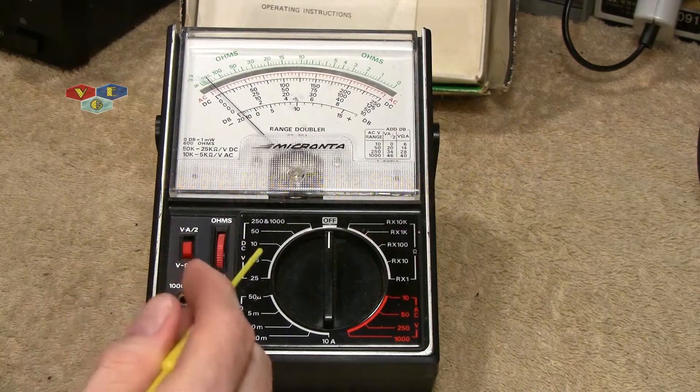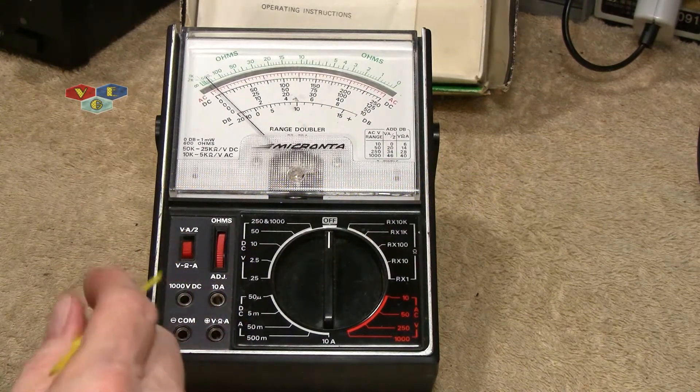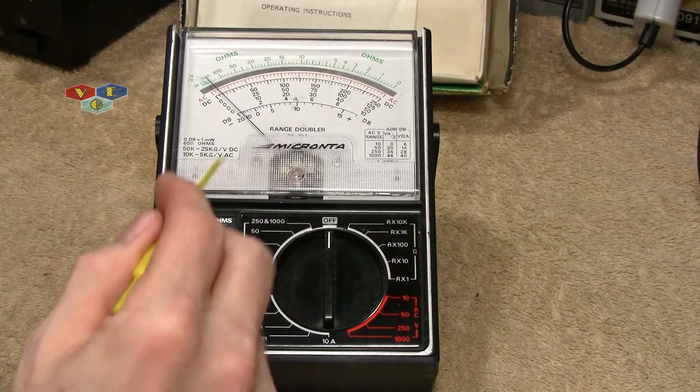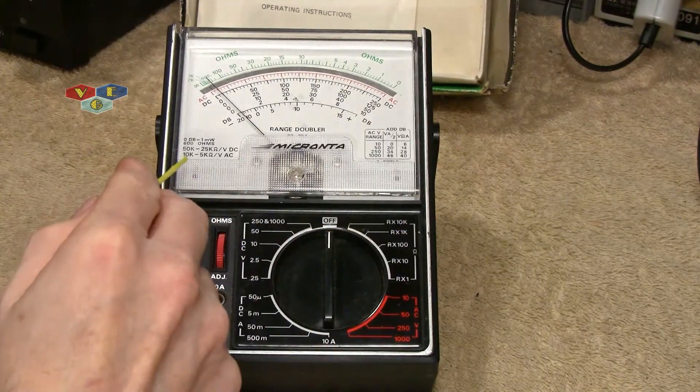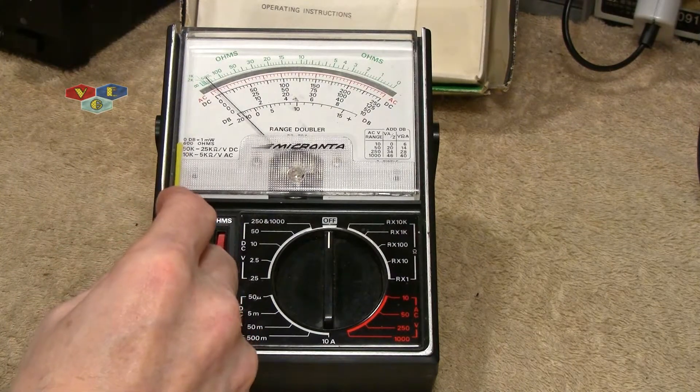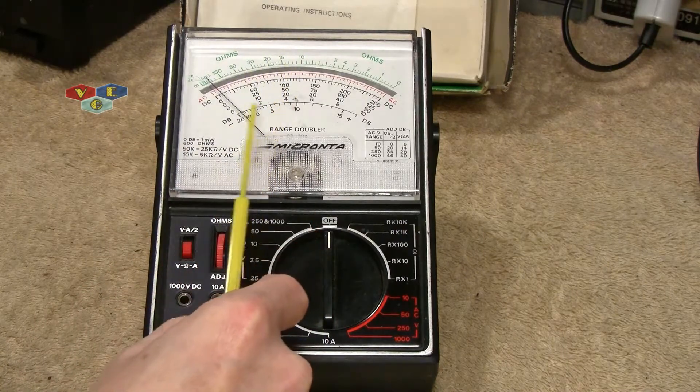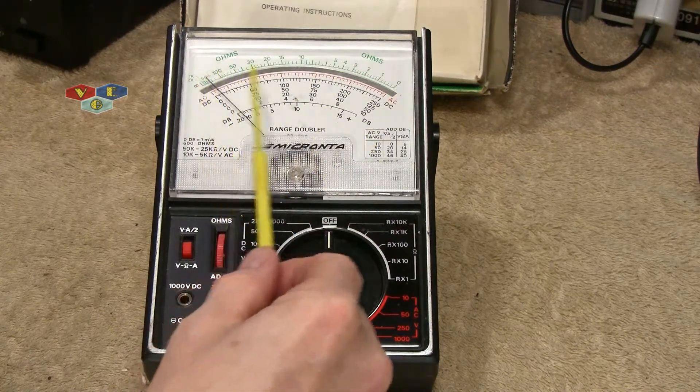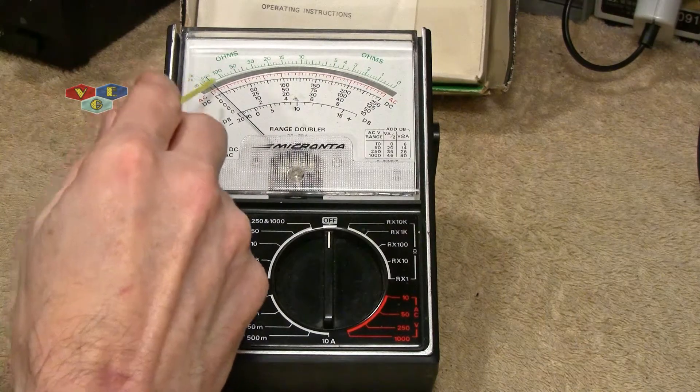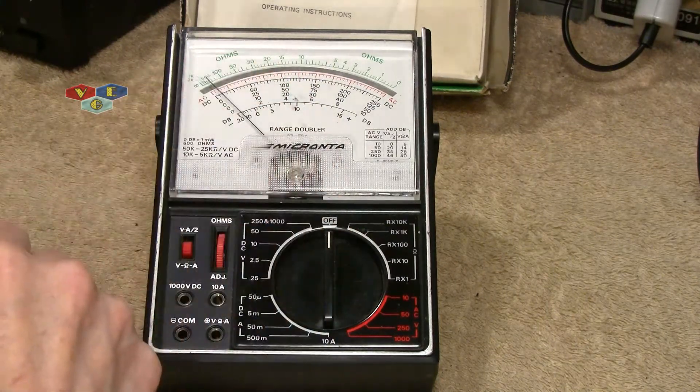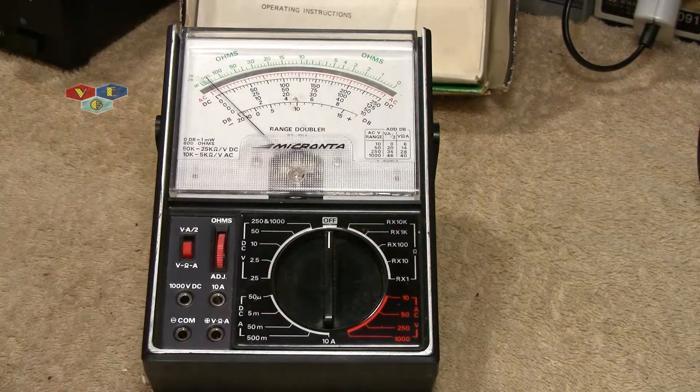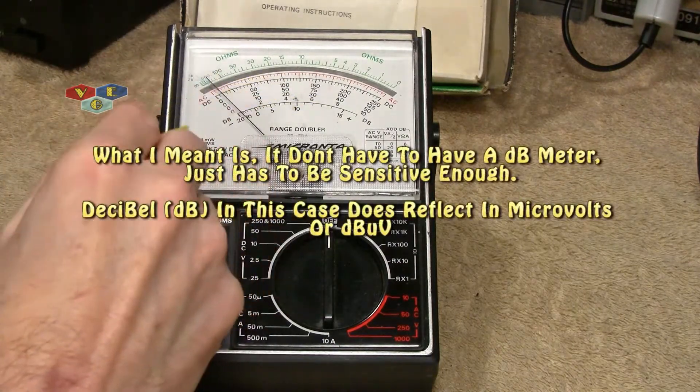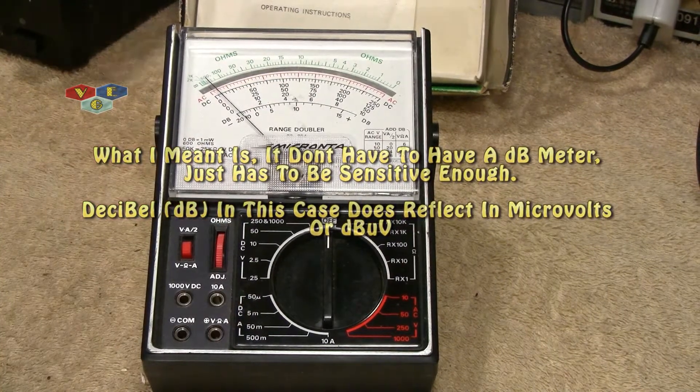For this scenario generally a VTVM is what's required, vacuum tube volt meter, but this will work. This is 600 ohms as you can see right there. We also have a DB gauge and we got a pretty little mirror to look at ourselves. Now that's to help calibrate the meter or get a better accurate measurement. And so that's really the only reason why I bought it, 600 ohms DB meter, get the right tool for the right job right.